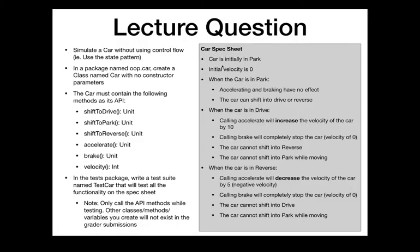Any other questions before we get started? Today's lecture question, as promised, is a little more complicated than the last one — not overly so. I had a more complicated version that I shared with the TAs and toned it down just a little bit. Still not necessarily easy. Today we're going to simulate a car. We have these API methods — just like last time, we have methods that change state and have behavior, and one method to check internal functionality. We're only checking velocity to test proper functionality.